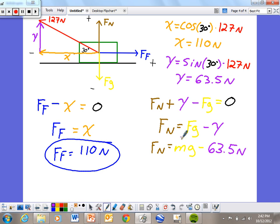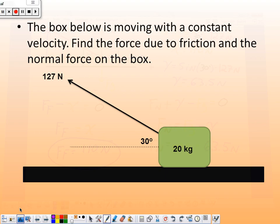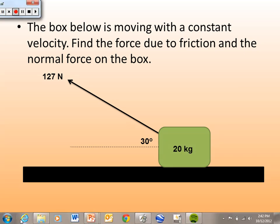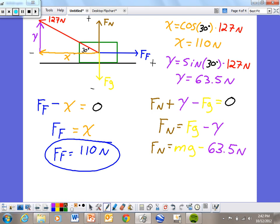So now we need the mass of this object, which was given in the problem. Did you forget? Let's jump right back here. Mass is given right here at 20 kilograms. Always good to know. So we can plug that number in. F of n equals 20 kilograms times 9.8 meters per second squared minus the 63.5 newtons. And when I plug that all in to my calculator, I get that my normal force is 132.5 newtons.